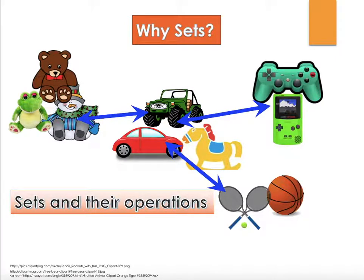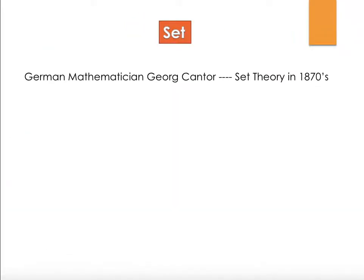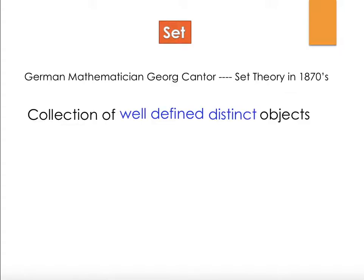It just makes things easier for us to view and perform operations when dealing with certain objects — that's why we use sets. Now let's look at the background of sets. Set theory was actually started by the German mathematician George Cantor in the 1870s. It is defined as a collection of well-defined distinct objects.